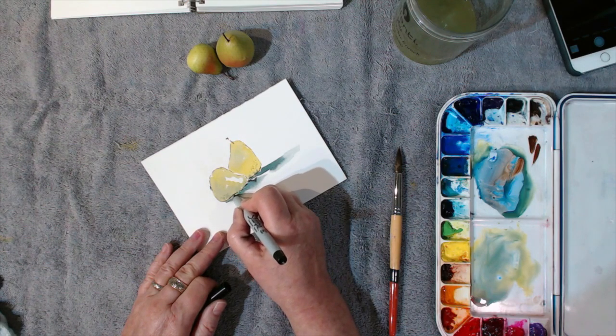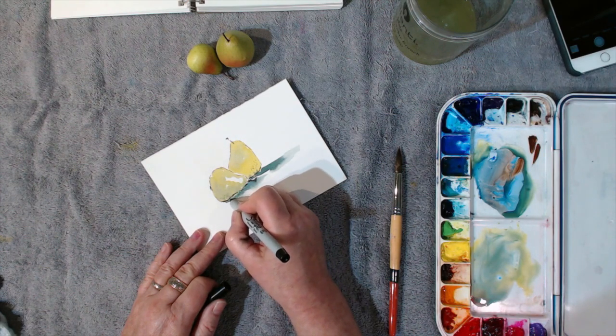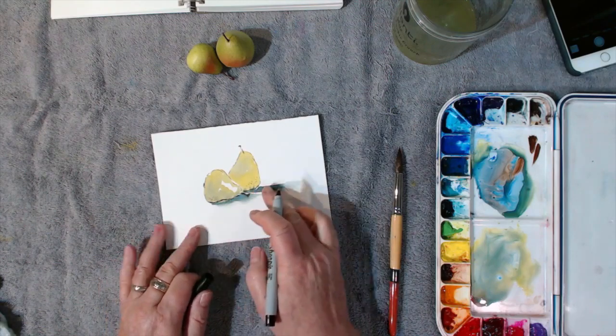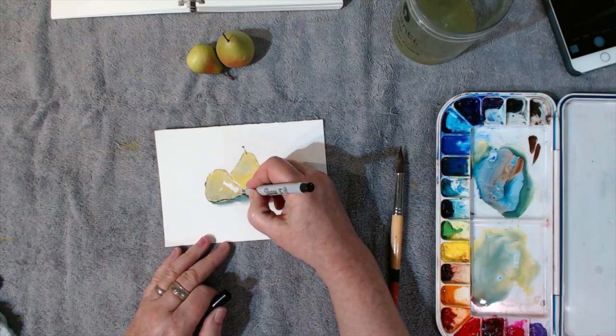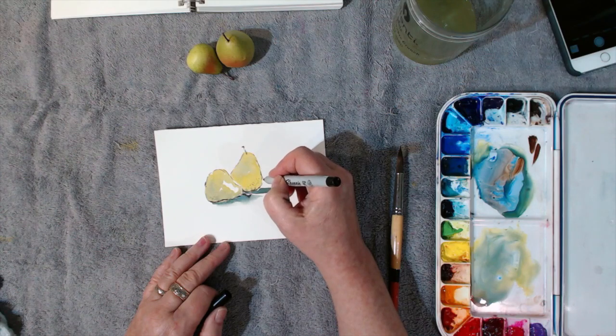I can also darken a little bit underneath on these shadows just to give them a little bit more definition, just to kind of sharpen up the drawing and make the pears stand out a bit more.